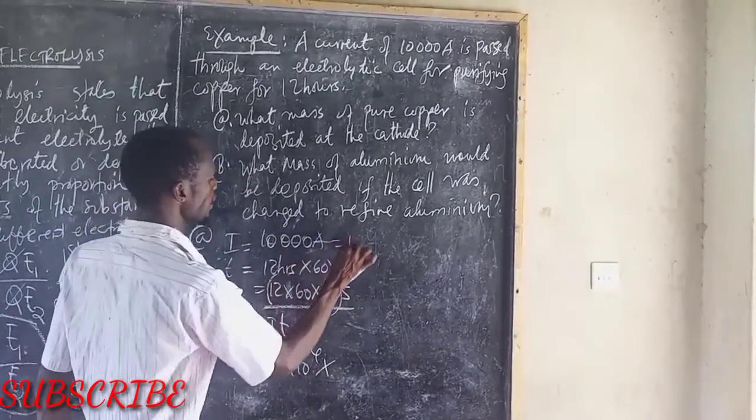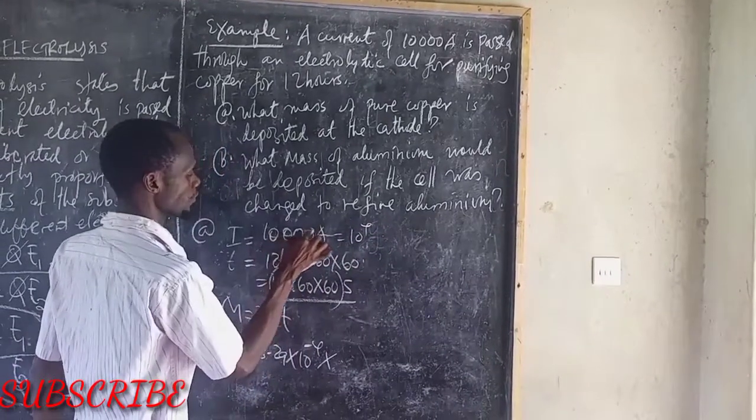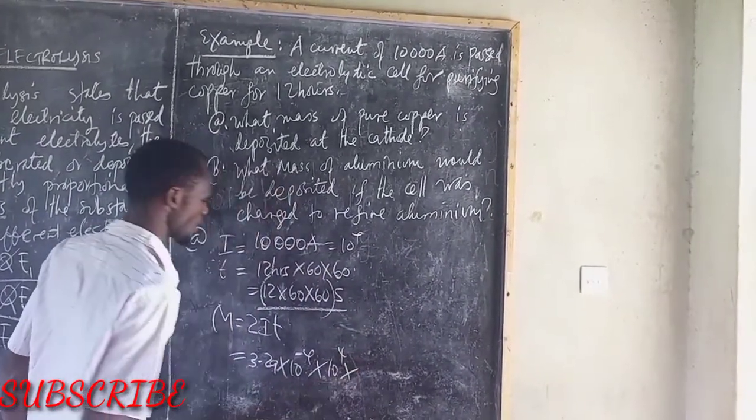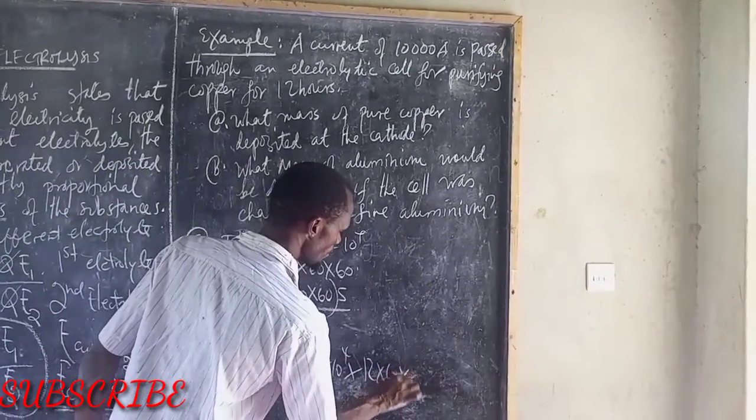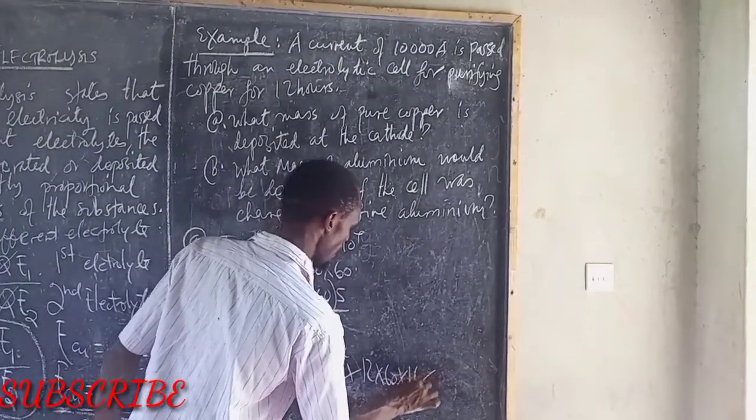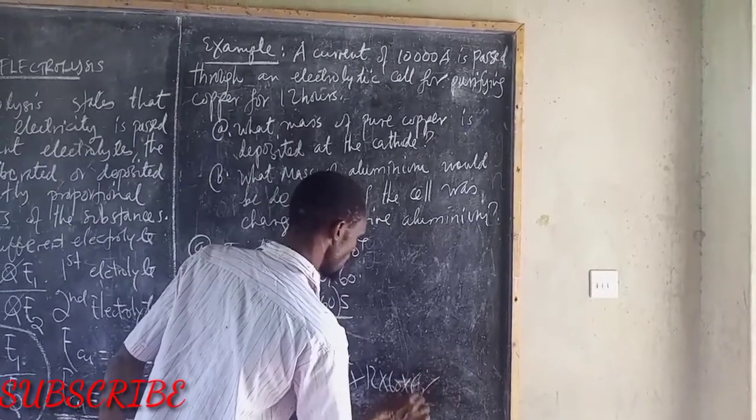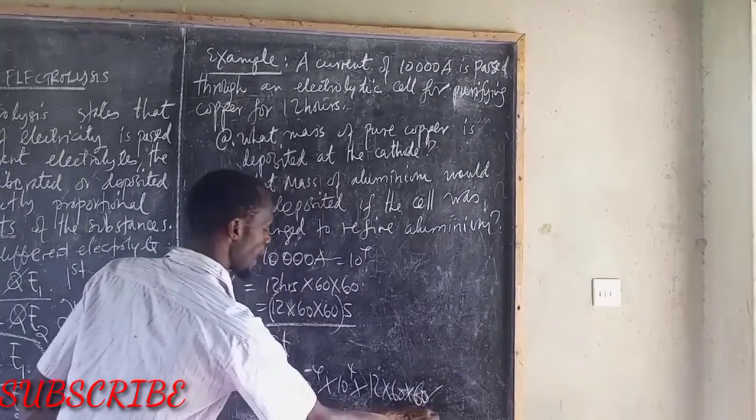This is equal now to 10 power 4, then times time which is 12 times 60 times 60. Therefore, you multiply.